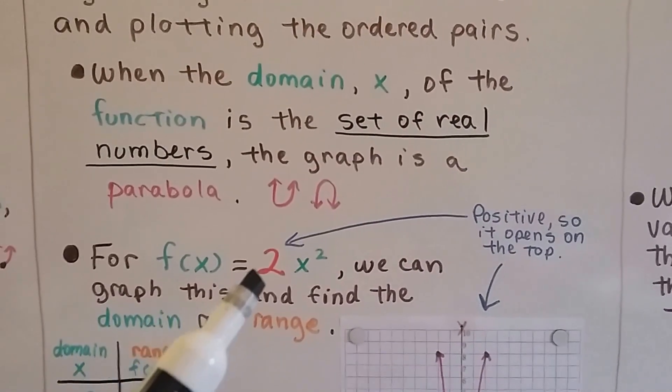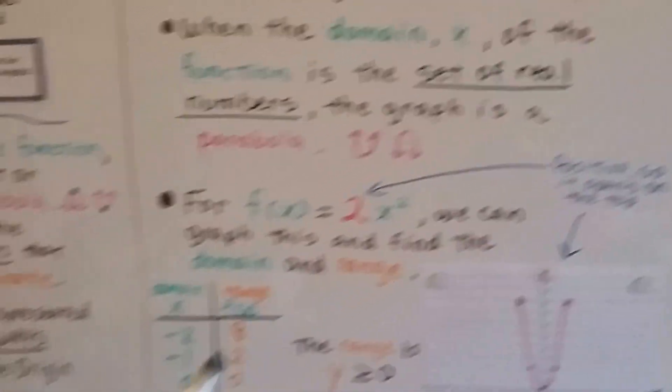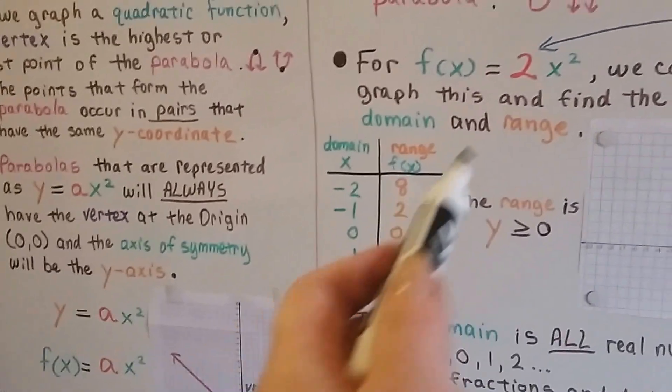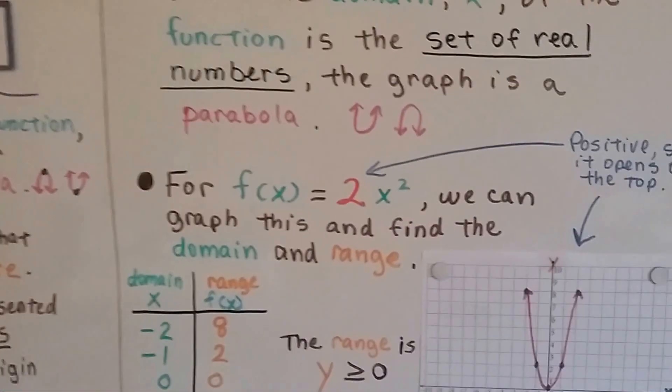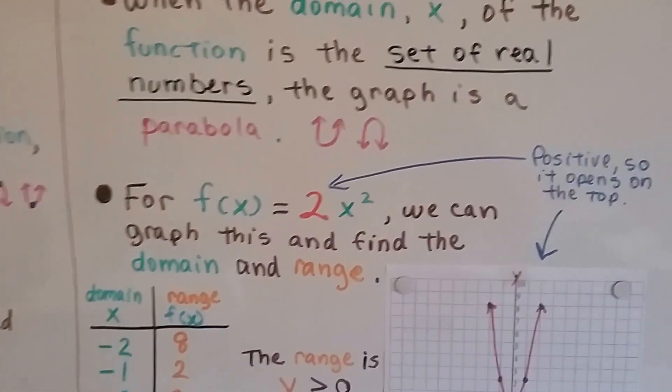For the function of x to equal 2x squared, that's in that form, isn't it? See? We've got the a as the red 2. We can graph this and find the domain and range.